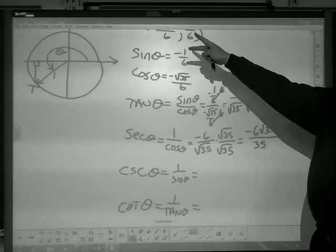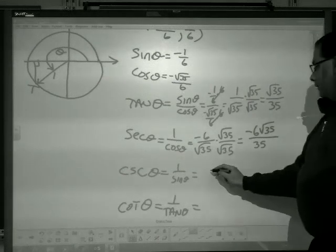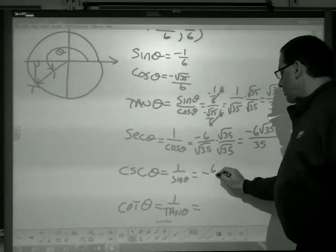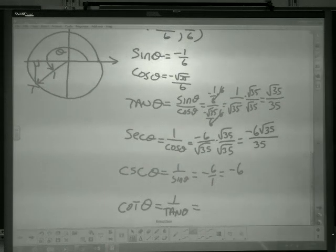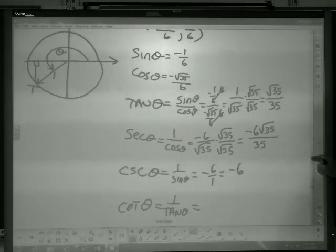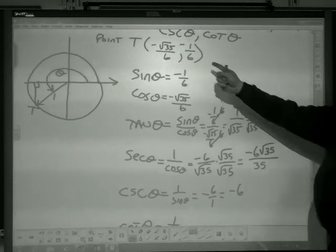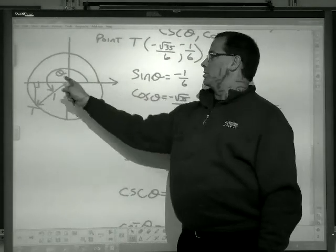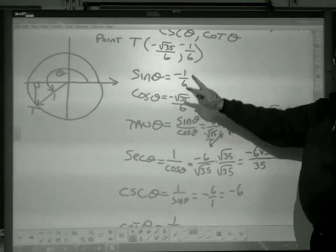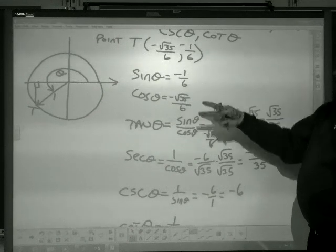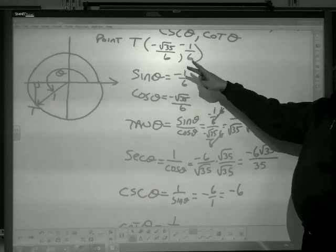The cosecant is the flip. Well, negative does not go away just because I take the reciprocal. And, negative 6 divided by 1 is just negative 6. And, that's only for this angle created by this point intersecting the unit circle. So, this isn't all true for every angle. What holds true is the secant is the reciprocal of the cos. The cosecant is the reciprocal of the sine.